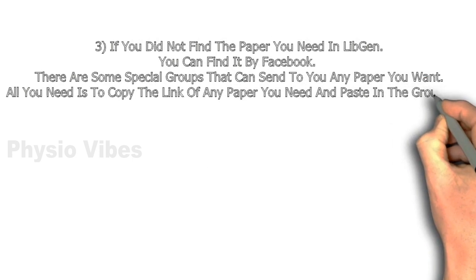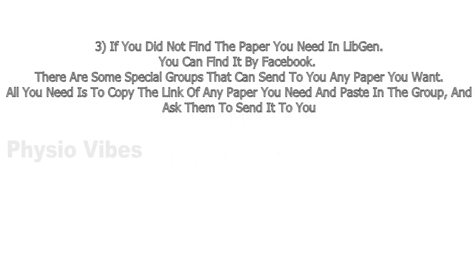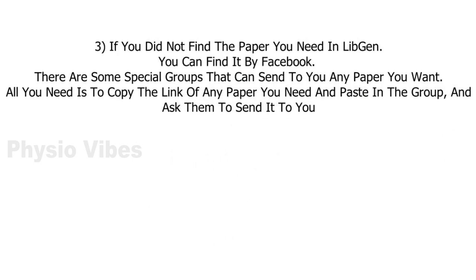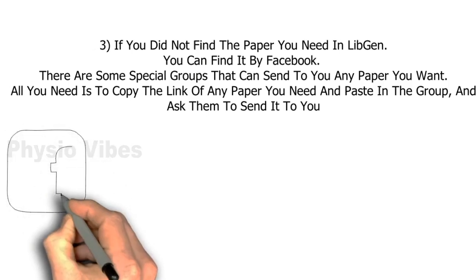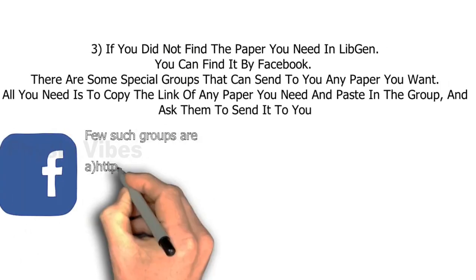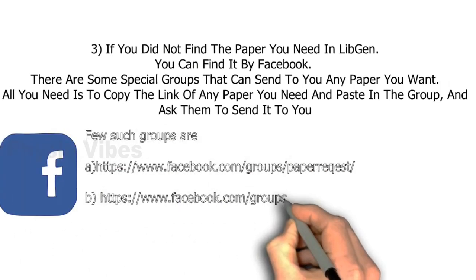If you did not find the paper you need on Library Genesis, you can find it via Facebook. There are some special groups that can send you any paper you want. All you need is to copy the link of the paper you need, paste it in the group, and ask them to send it to you. A few such groups are shown on screen.